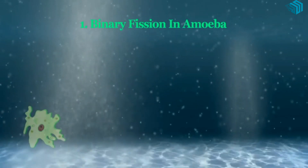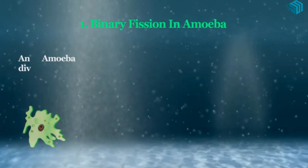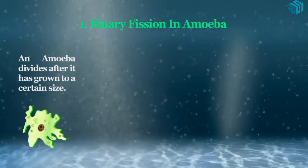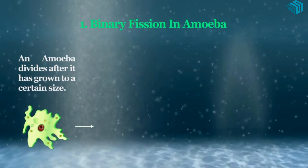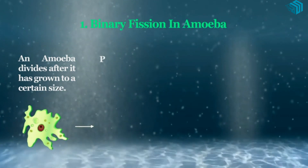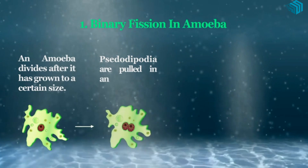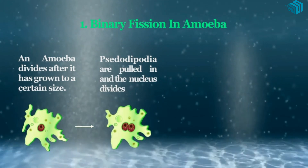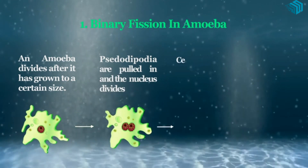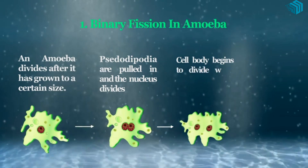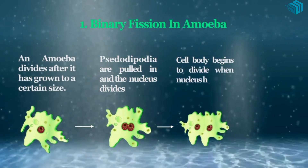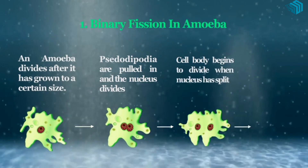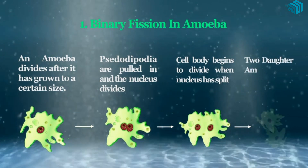Amoeba divides after it has grown to a certain size. The pseudopodia are pulled in and the nucleus divides. The cell body begins to divide when the nucleus has split. Two daughter amoebae are formed.